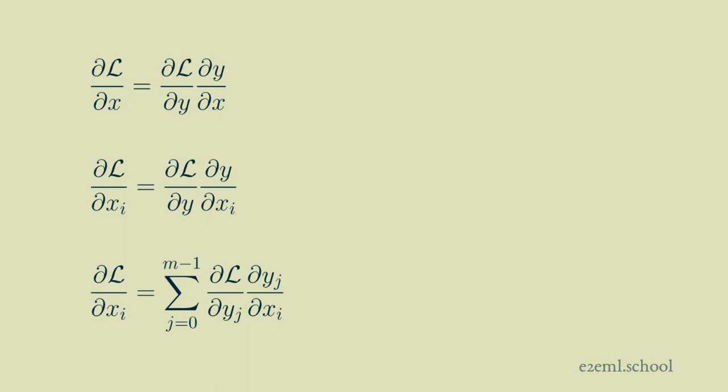And the way we calculate that is by the chain rule, the partial derivative of the loss with respect to y times the partial derivative of y with respect to each input element.